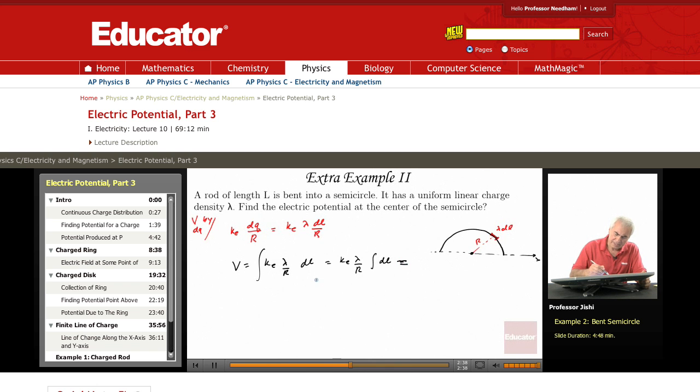ke lambda over r times pi r. That's the length of the semicircle.